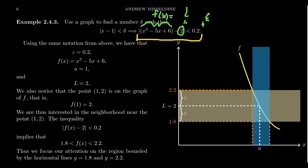Essentially, in general, these epsilon-delta statements will have an expression of the form: the absolute value of f of x minus L is less than epsilon. Reading these things off, our function f is this cubic function y equals x cubed minus 5x plus 6, L — our target value — is equal to 2, and our acceptable error is going to be 0.2.